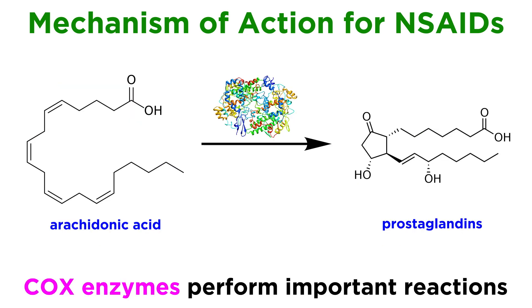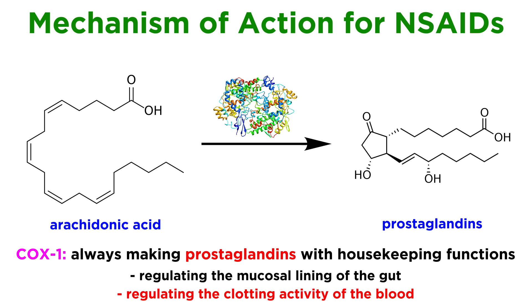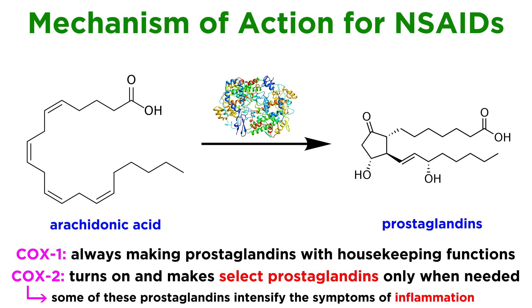In the body, COX enzymes perform the first two enzymatic reactions in a pathway converting arachidonic acid into a series of compounds called prostaglandins, which are involved in many of our bodily functions. COX-1 is always working to make a group of prostaglandins which serve a host of housekeeping functions, such as regulating the mucus lining of our gut and the clotting activity of our blood. COX-2, however, turns on and generates select prostaglandins in response to the needs of our bodies, and in response to inflammation in particular, generates prostaglandins that intensify the symptoms of inflammation.